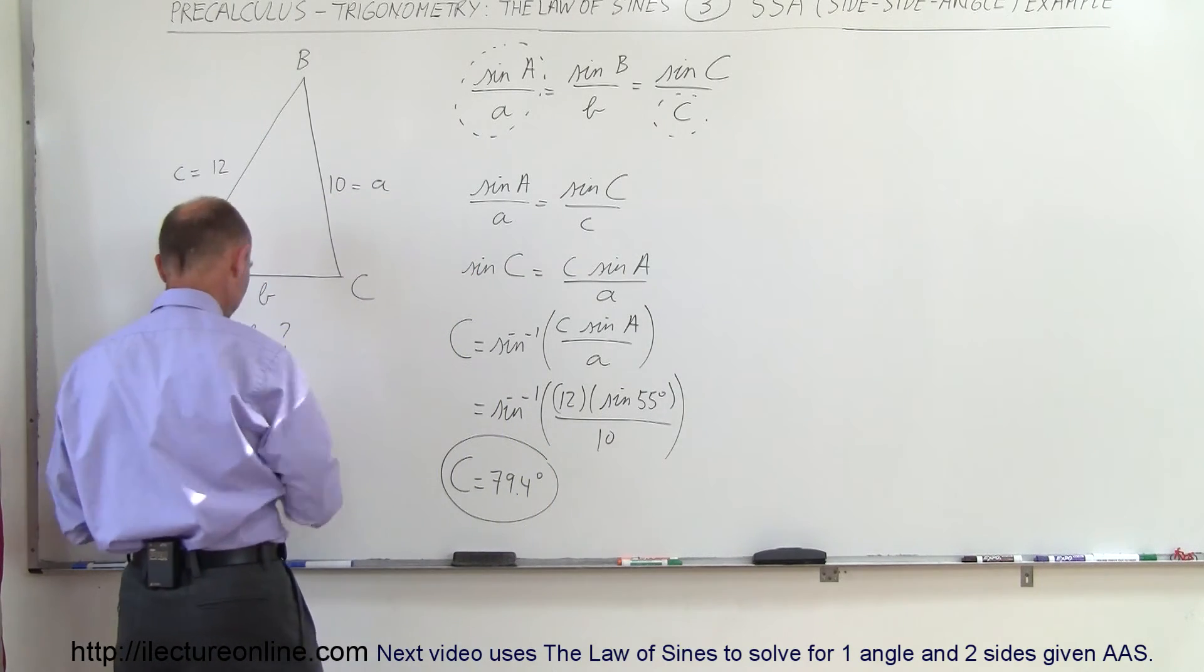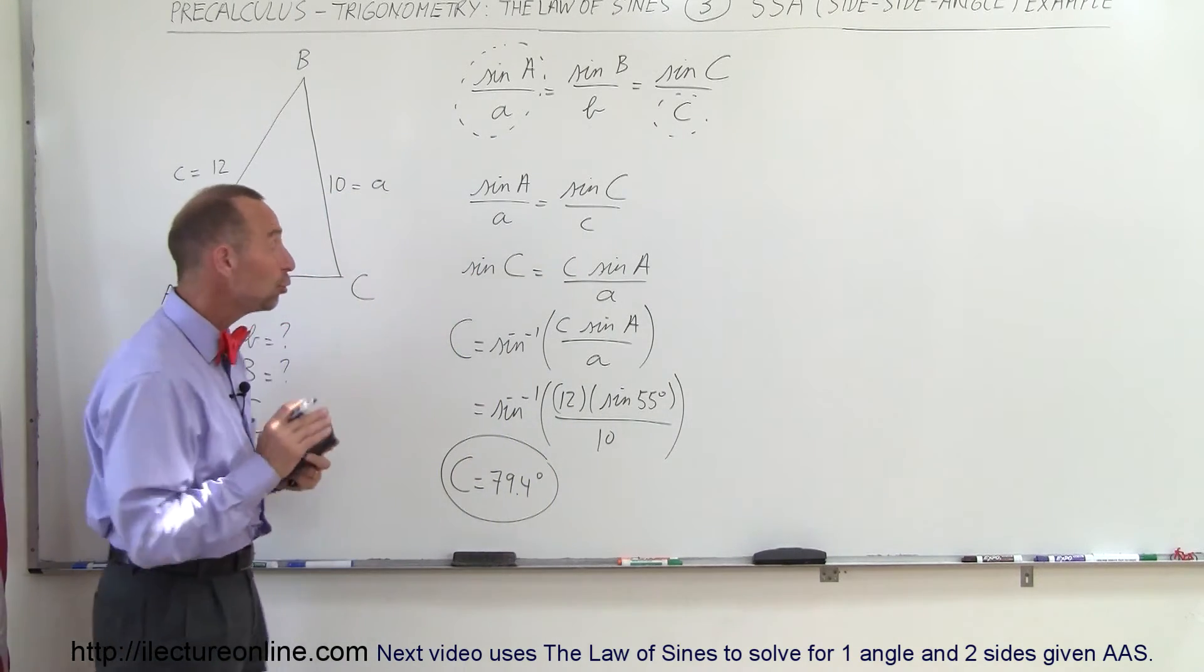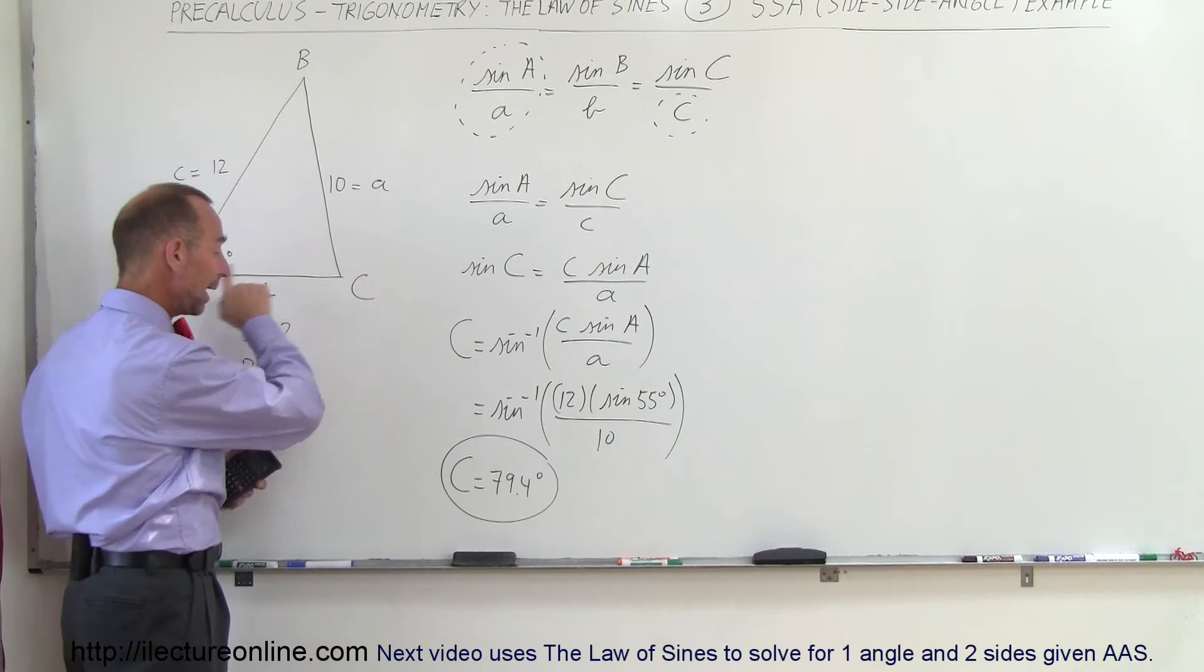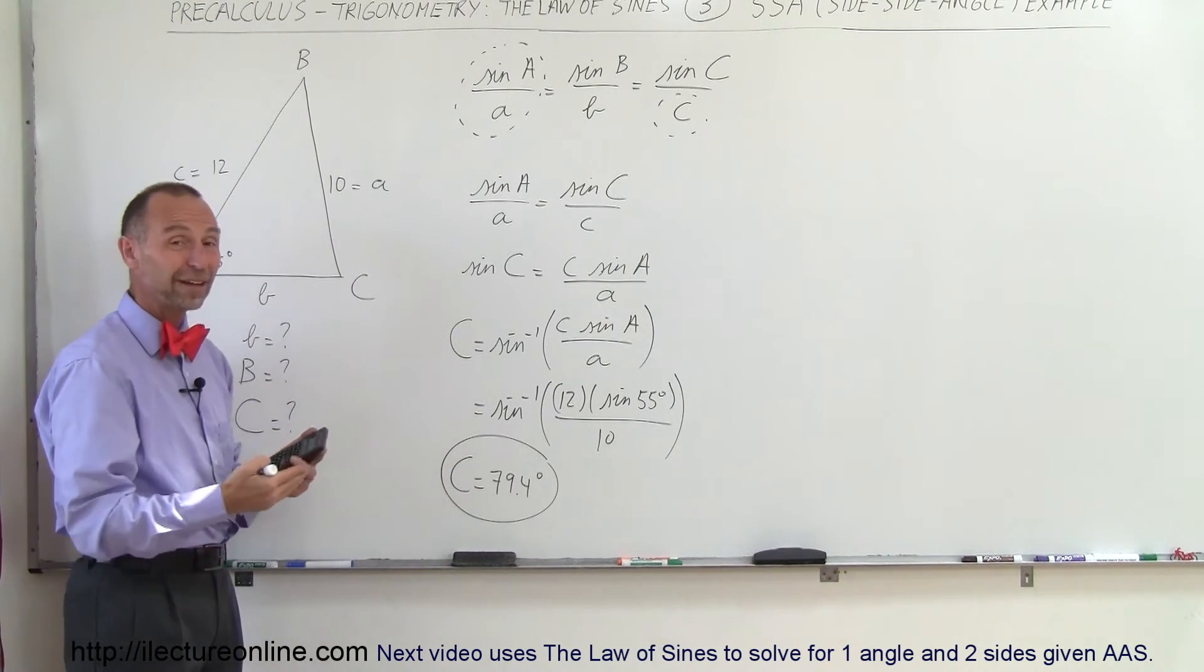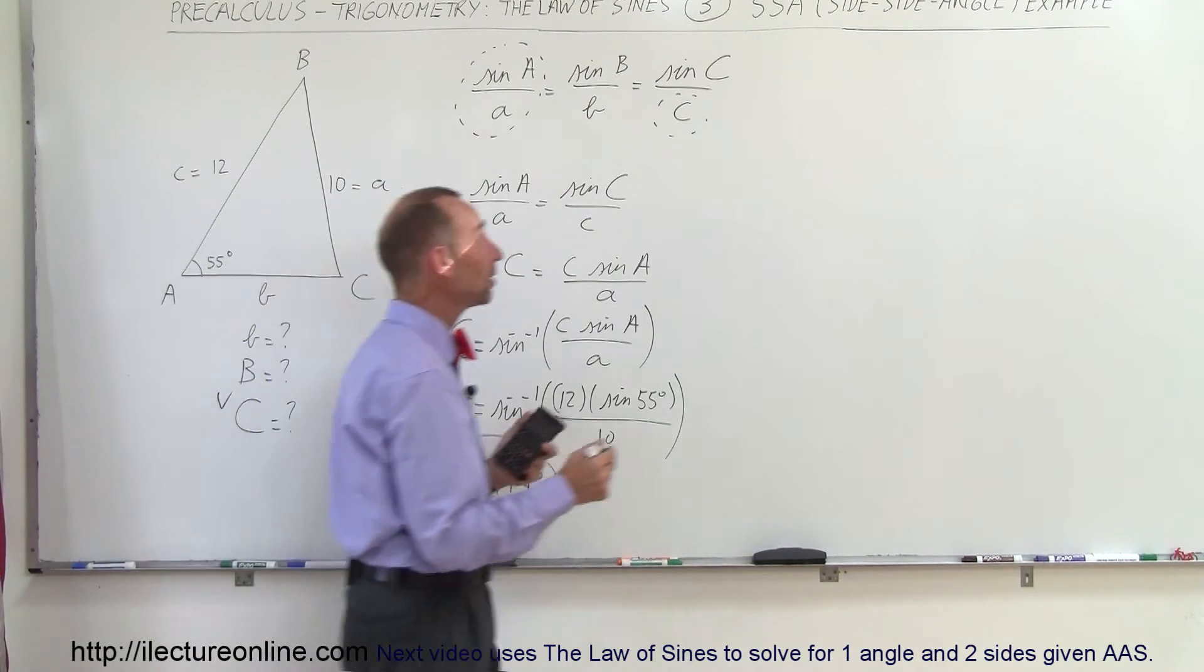So we have one of our answers. Alright, now that we know two of the angles, we know A and we know C, we can then find the third angle because we know the sum of the angles add up to 180 degrees.